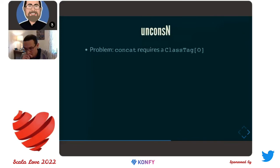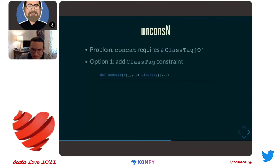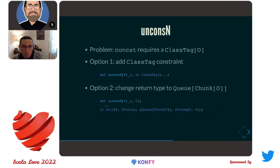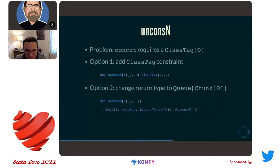Again, just like before, this doesn't actually work — because those `concat` calls are going to require that ClassTag constraint, and we have the same set of trade-offs we had with map. Do we make that ClassTag constraint a parameter of the `unconsN` operation? That's one option, but it's going to propagate. We can change the game and say we don't need to concat — sometimes as programmers we forget we can do this. In this case, instead of concatting a queue of chunks into a single chunk, maybe we just return our queue of chunks directly. That's an option.